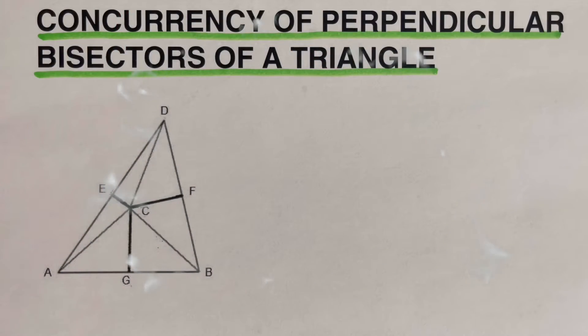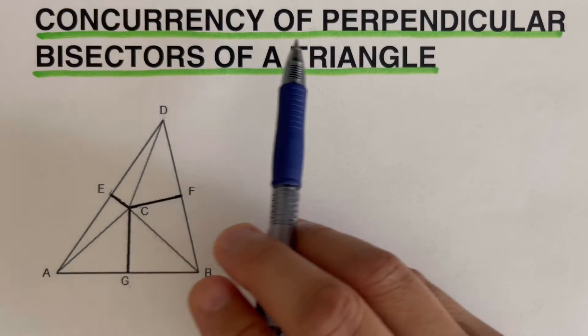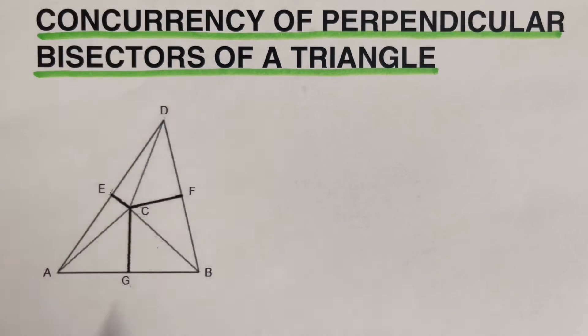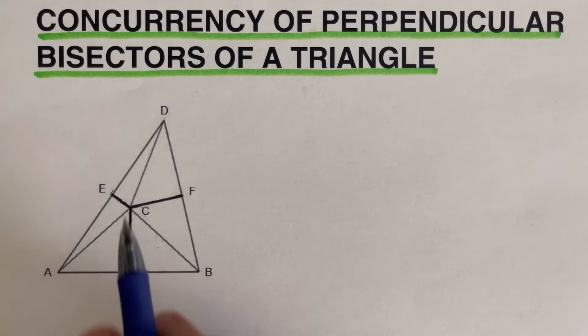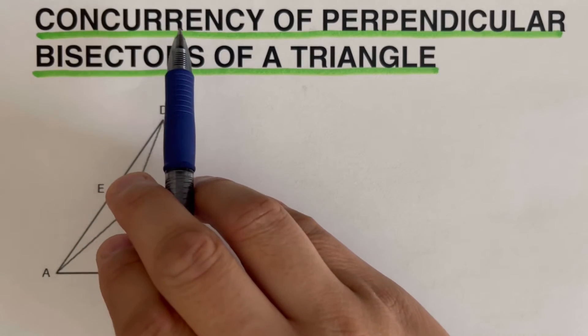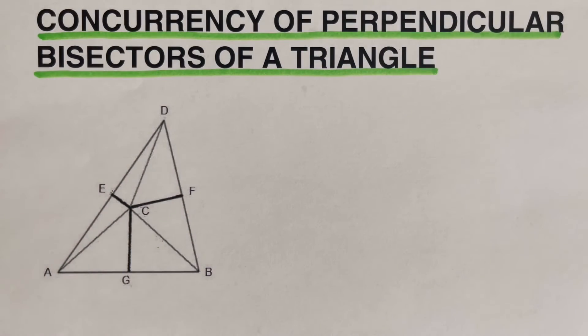Hello, everyone. This video will focus on concurrency of perpendicular bisectors of a triangle. Before we go over this figure that we have right here, let's define first concurrency or point of concurrency and perpendicular bisector.